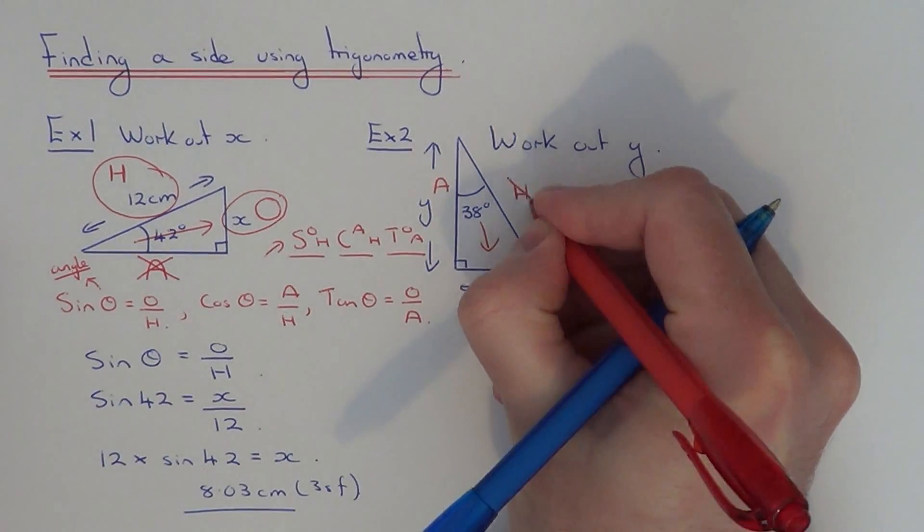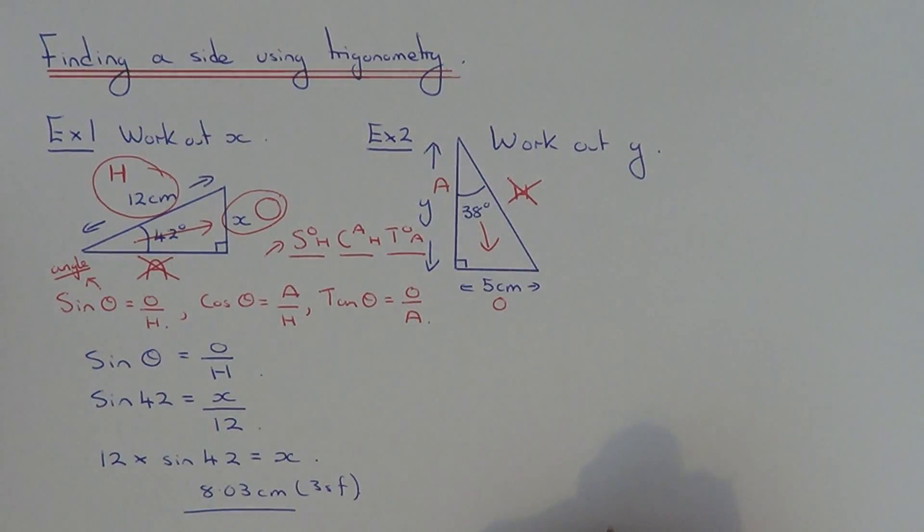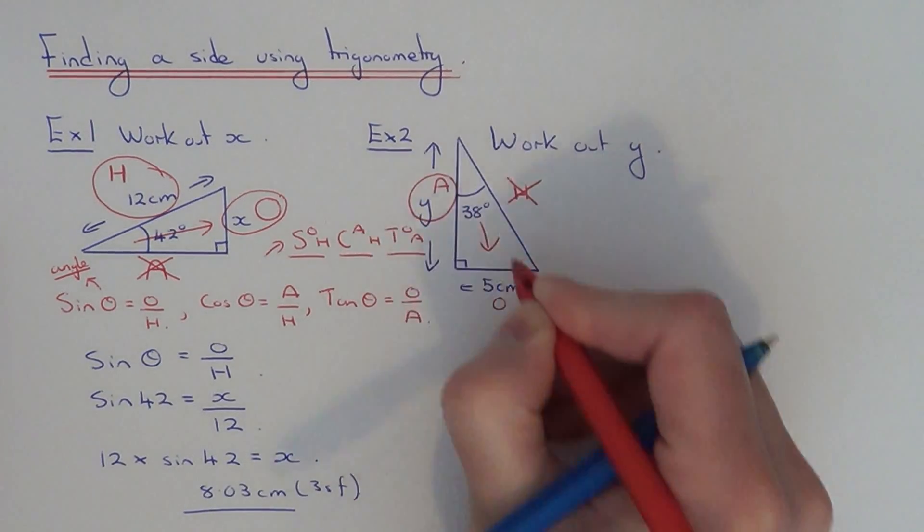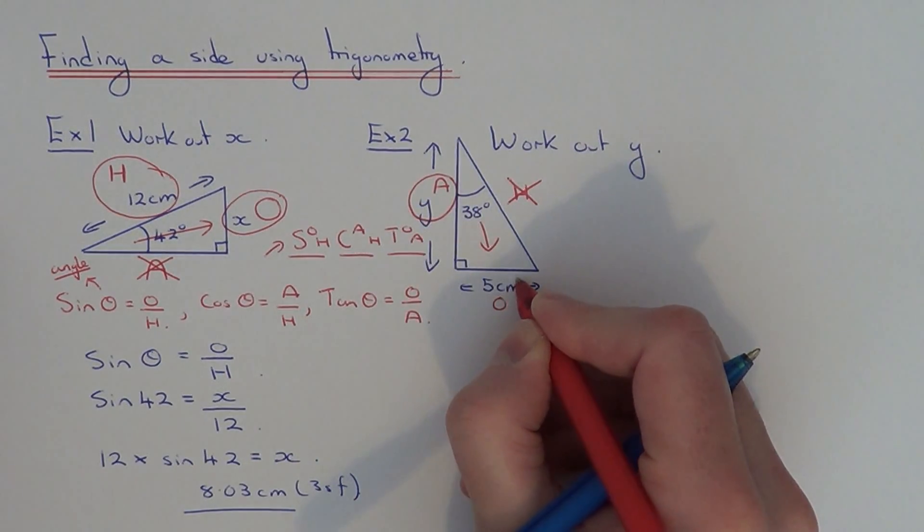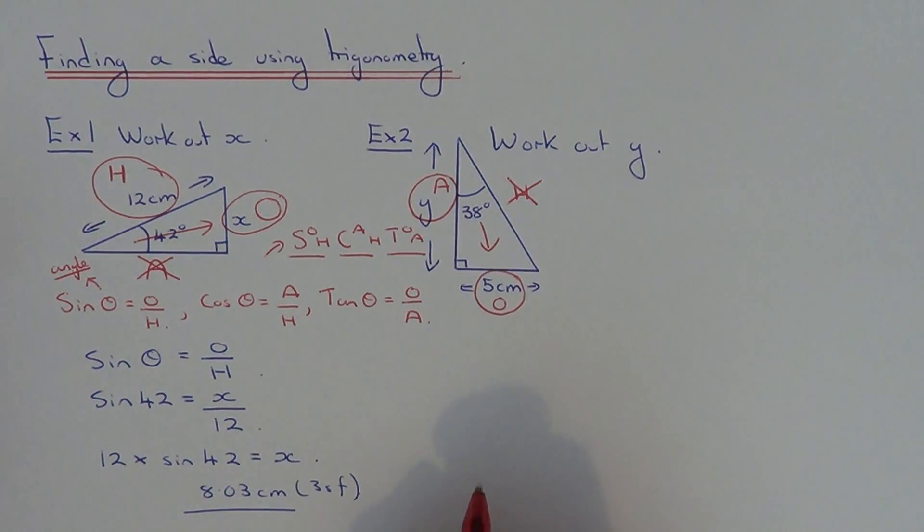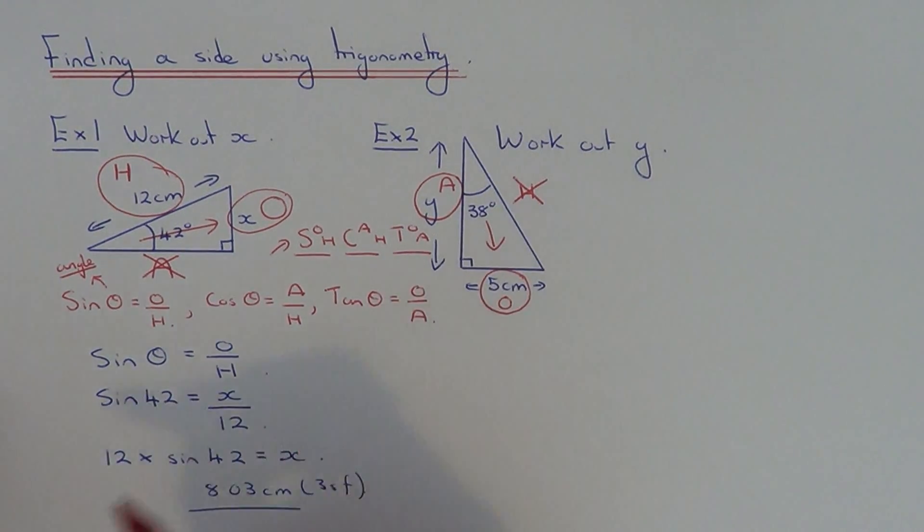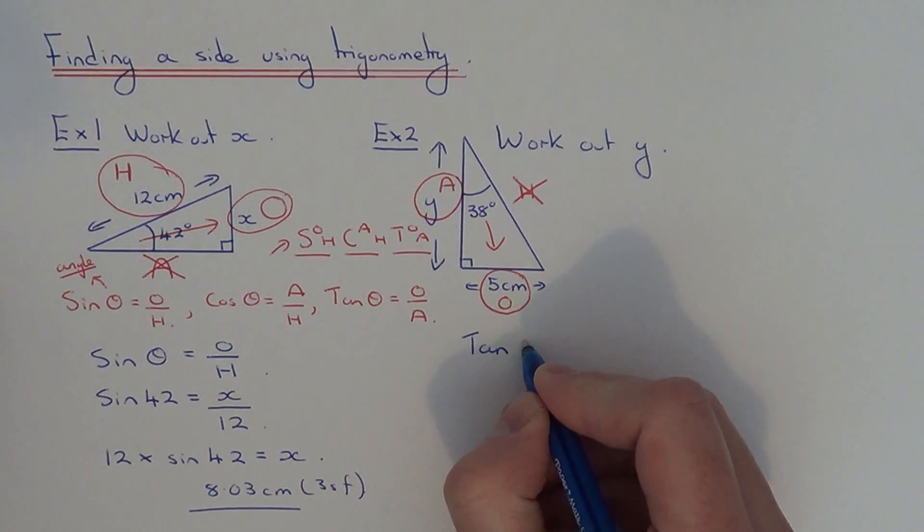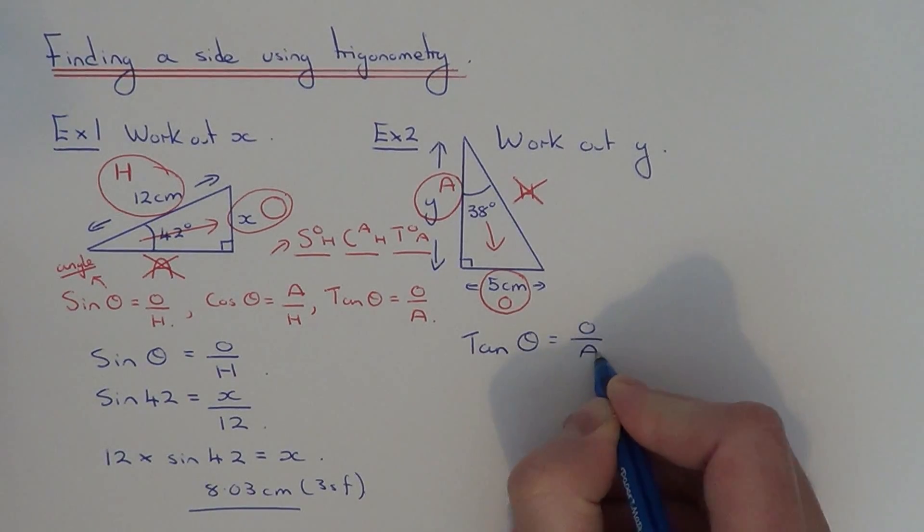It's nothing to do with the hypotenuse, so we can cross that one out. We have to work out the adjacent side, so it must have A in. And we're given the opposite side, so it must have O in. So which one of the three trig formulas contains O and A? If we look at the three here, O and A would be the tan formula. So if we copy this one down: tan θ equals opposite over adjacent.